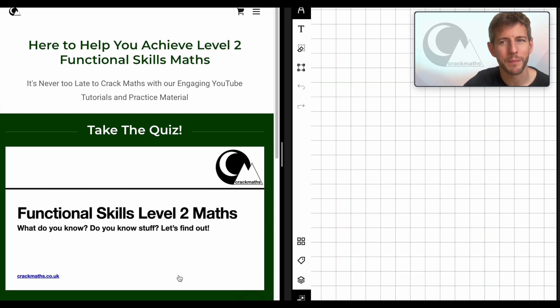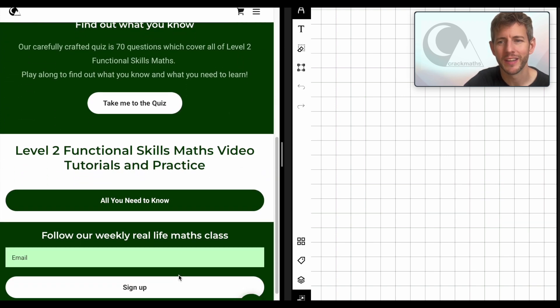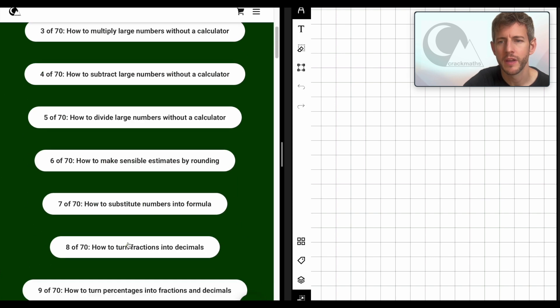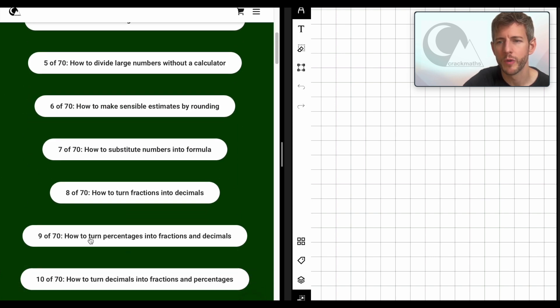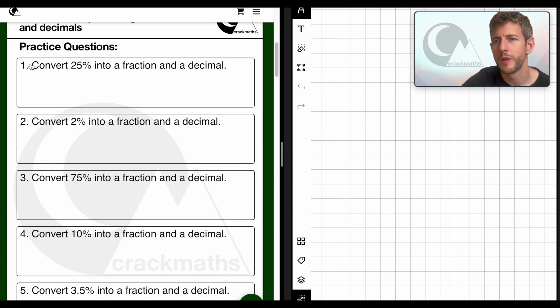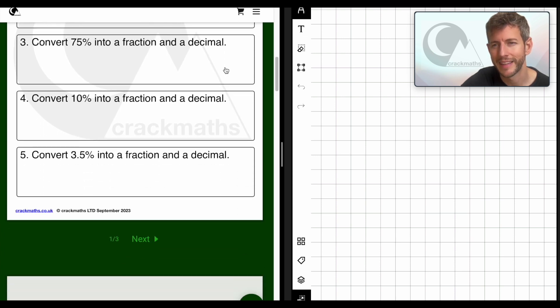So here we are on the Crack Math site and let's take a look at the questions that we need to find. So we want that all you need to know. And this time we're looking for tutorial 9, how to turn percentages into fractions and decimals. So here we are. Let's have a look. So here we go. Here's some of the practice questions. Convert 25% into a fraction and a decimal. So remember the fraction is a fraction out of 100. And a decimal is to divide the 25% by 100.